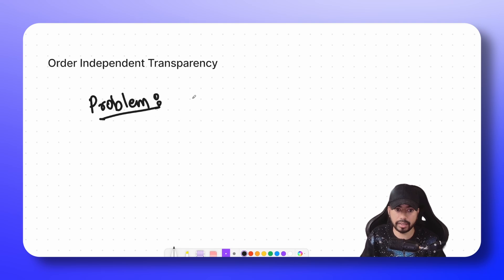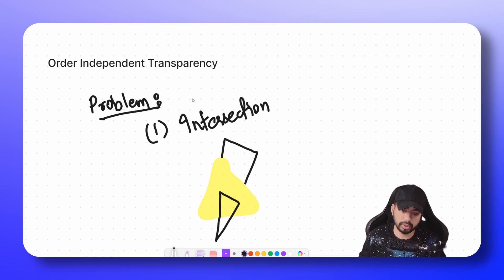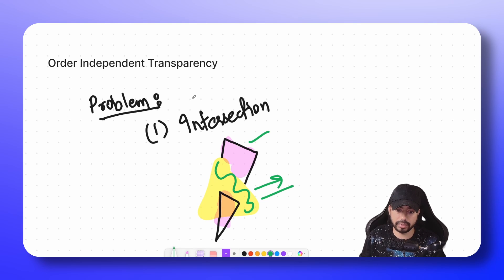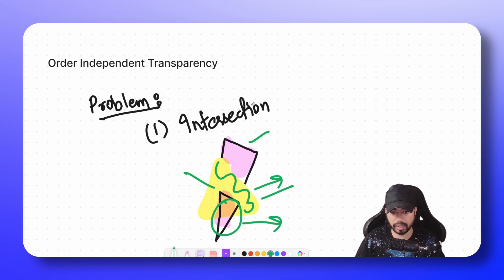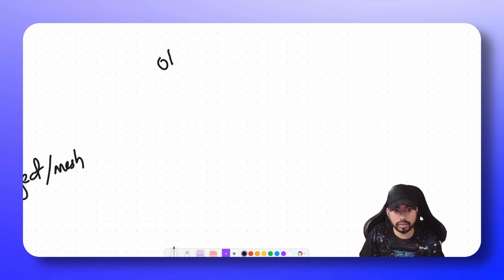The main problem with sorting objects from back to front is intersection. Let's say you have one transparent triangle and another transparent triangle intersecting it. In this case, sorting won't work properly because you cannot identify if one triangle is in front or behind the other. For different parts of the screen, different triangles are in front. So you cannot decide which triangle is in front or behind, since sorting is a per-object or per-mesh operation.